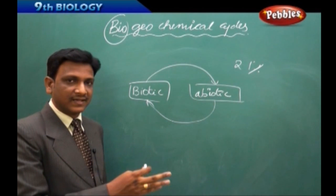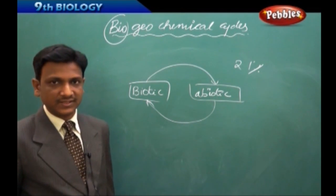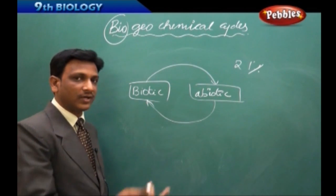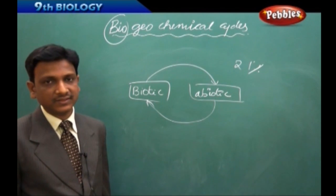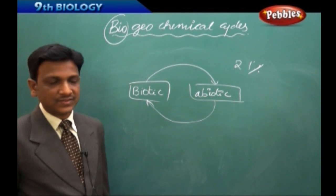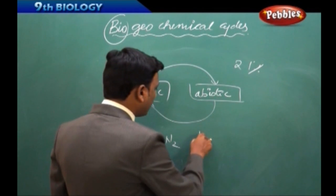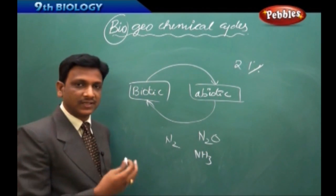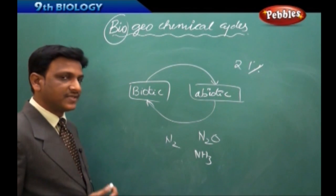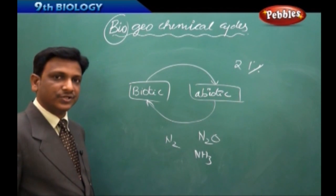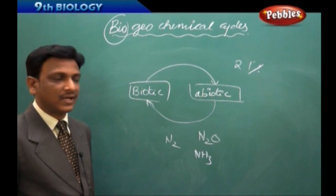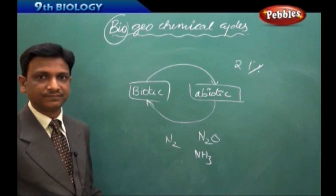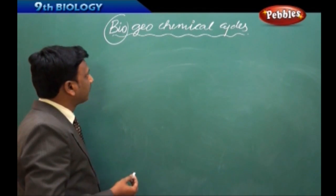Chemicals change their state and move from one component to another — between two living things, between two non-living components, or between living and non-living things. Their chemical form may also change: sometimes they are in the form of an element, sometimes in the form of a compound. In biogeochemical cycles, chemicals continuously change state, form, or location in a cyclic manner, and their percentages remain stable unless disturbed by pollutants.